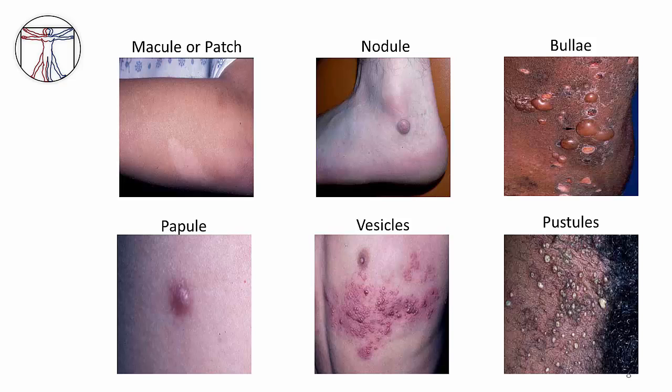Nodules or plaques are similar to papules, except that they are larger and occasionally deeper in their origin and extent. There are many different causes of nodules, including trauma, infection, and skin cancer. Vesicles are basically papules that are fluid-filled instead of solid. One very classic example of a vesicular rash is herpes zoster, also known as shingles, caused by the reactivation of varicella zoster virus. Bulla, or plural bullae, are larger vesicles, which may be seen in association with a variety of conditions, including simple friction blisters.